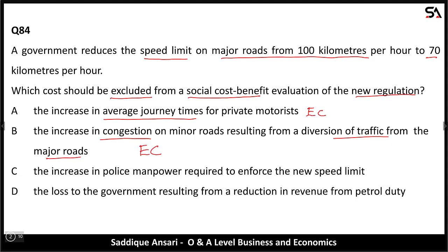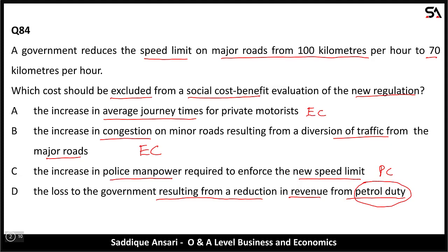Option C: the increase in police manpower required to enforce the new speed limit — this is a private cost to the government and will definitely be part of social cost, so C cannot be the answer. Option D: the loss to the government resulting from a reduction in revenue from petrol duty — when less petrol is consumed, that is what the government wants, and hence the government will not consider it in cost-benefit analysis. This option will be excluded, so D is the correct answer.